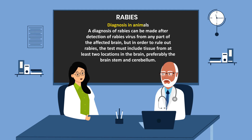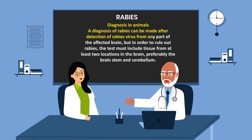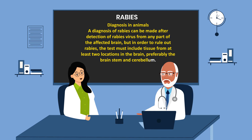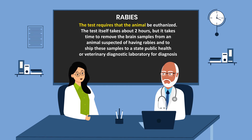Diagnosis in animals: A diagnosis of rabies can be made after detection of rabies virus from any part of the affected brain, but in order to rule out rabies, the test must include tissue from at least two locations in the brain, preferably the brain stem and the cerebellum. The tests require that the animal be euthanized. The test itself takes about two hours, but it takes additional time to remove brain samples and ship them to a state public health or veterinary diagnostic laboratory for diagnosis.